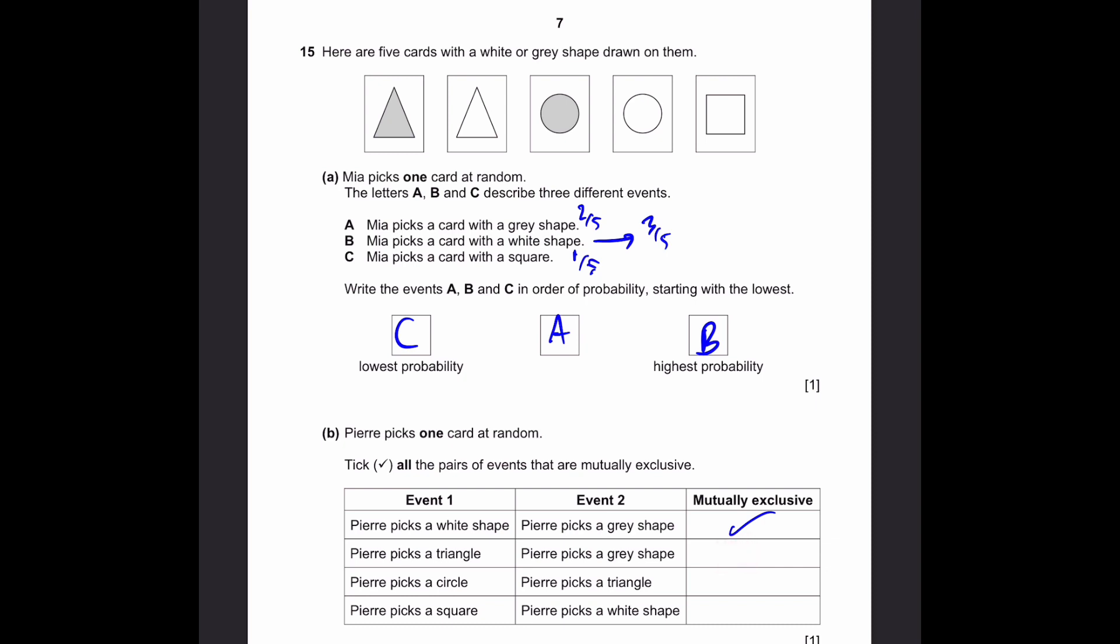Pierre picks a circle and Pierre picks a triangle. This is also mutually exclusive. You cannot have a circle and a triangle into one shape at the same time. These two are completely different shapes. If you choose a circle, it cannot be the triangle. If you choose a triangle, it can't be the circle. They can't happen at the same time.